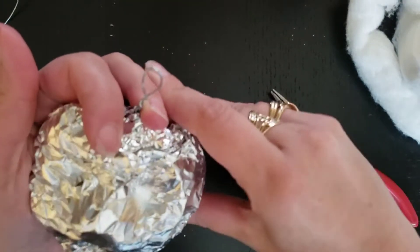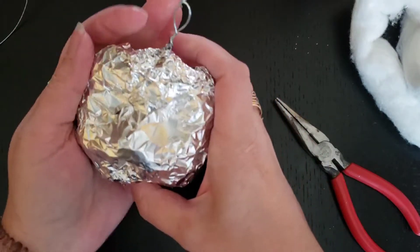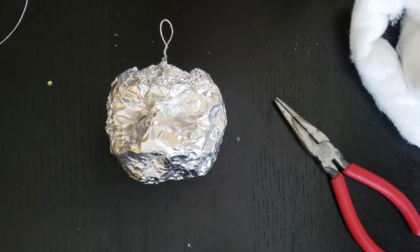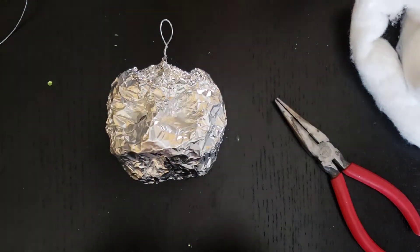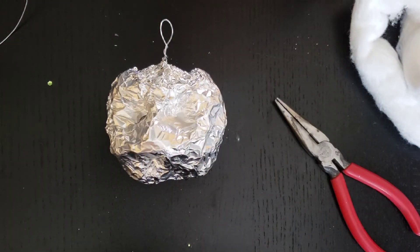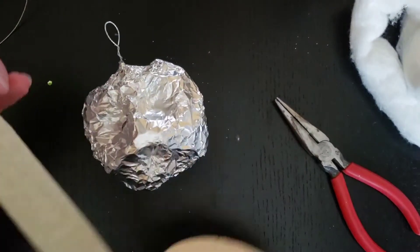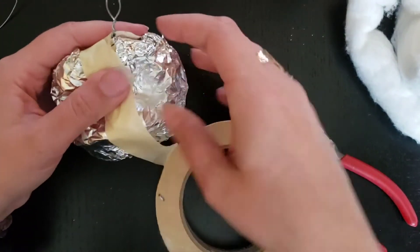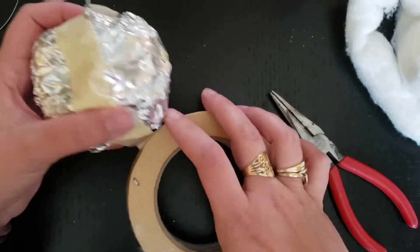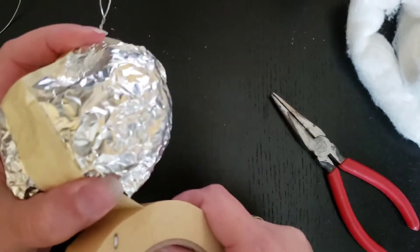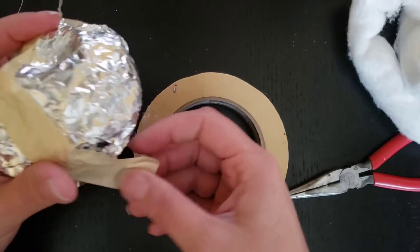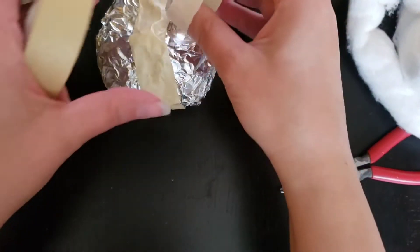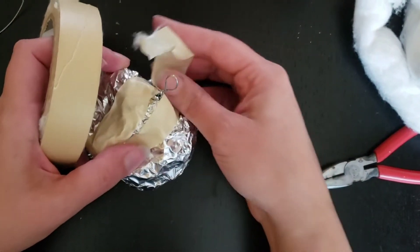Okay, once you've got your base into the shape you want, which I think this will work for what I'm doing, we're going to cover it in masking tape. This doesn't have to be super neat or tidy because you are going to cover this layer as well. Pretty much you're layering this over and over again. You're just going to keep taping this around.